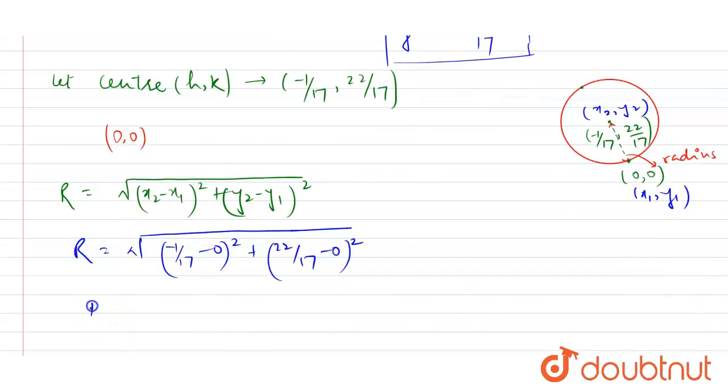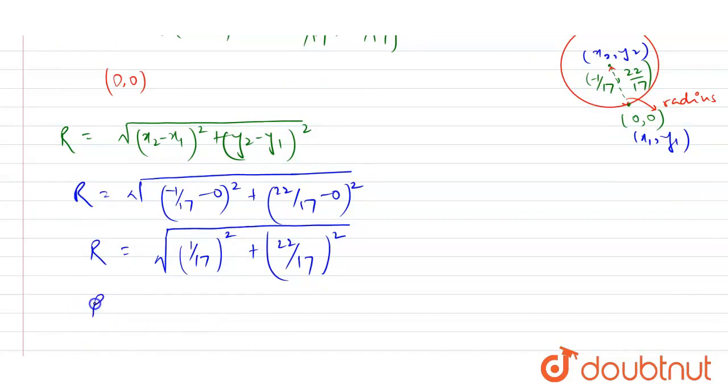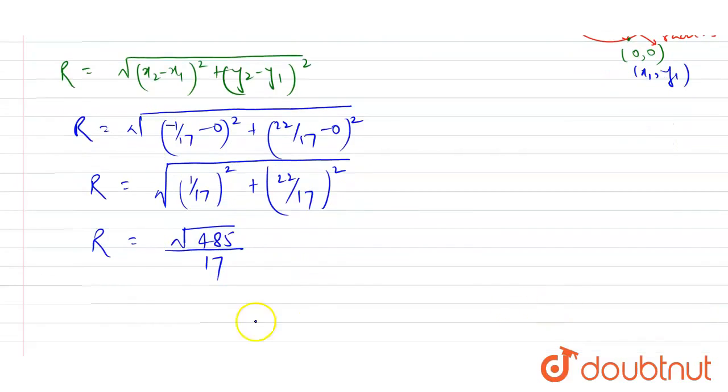Now if you solve this thing you will get √[(1/17)² + (22/17)²]. If I write it directly on solving, students, you will get √(485/289). So students this will be your radius.